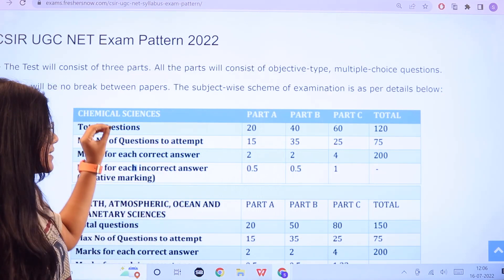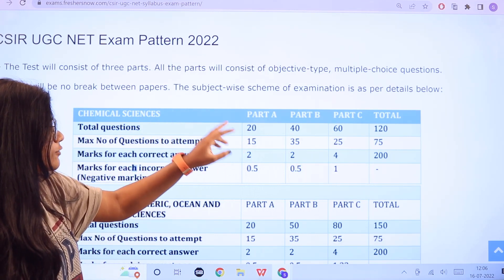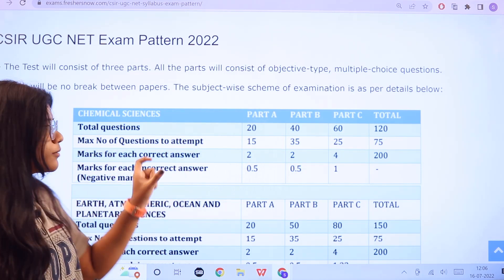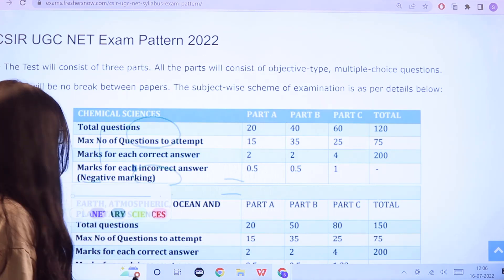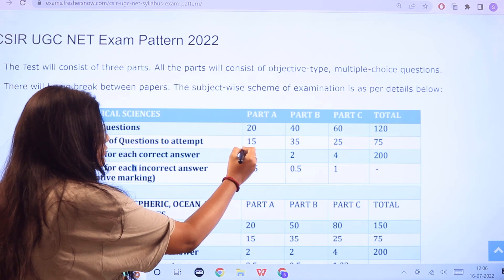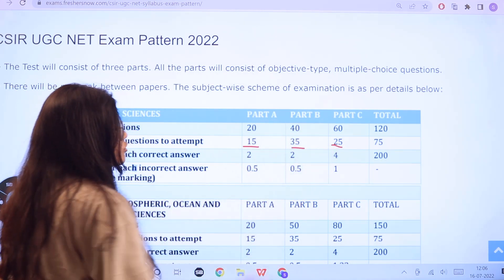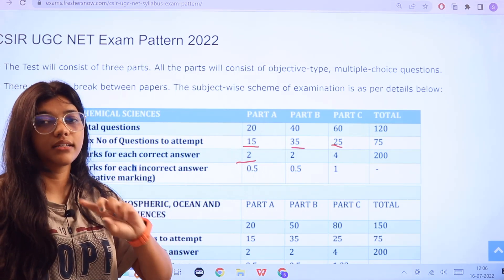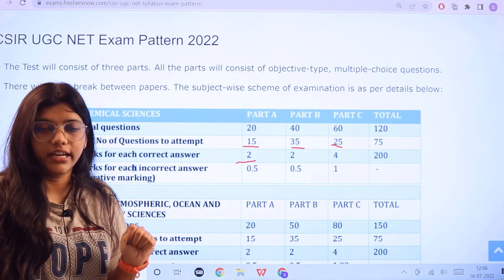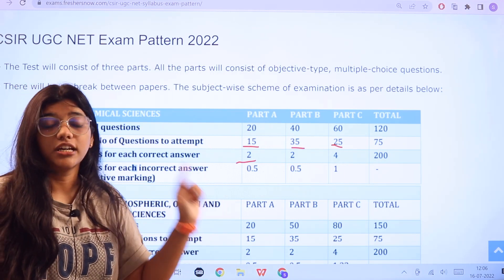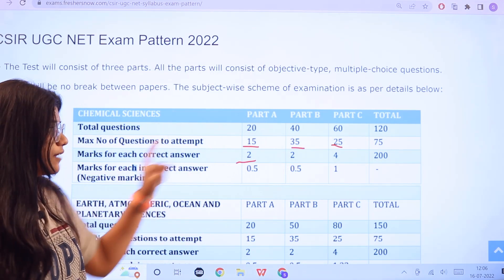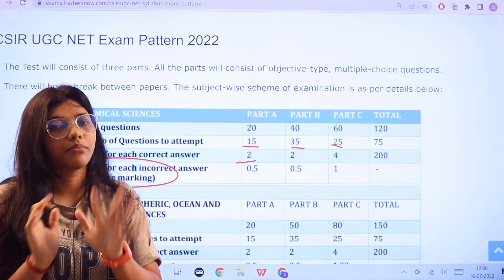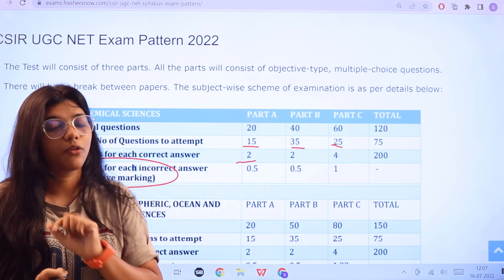The total number of questions for chemical sciences: for part A you have 20, for part B you have 40, for part C you have 60. In total you have 120 questions. The maximum number of questions that you need to attempt are 75. Marks for each correct answer: part A carries 2 marks, part B also it is the same, part C you have 4 marks for every correct answer. So for 120 questions, 200 marks is the marking scheme. For every incorrect answer there is negative marking: for part A 0.5, part B also the same, but for part C for every wrong answer one mark will be deducted.